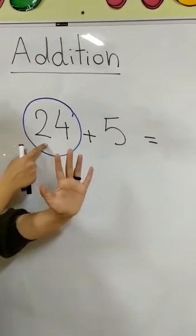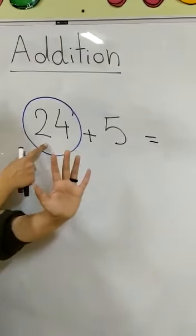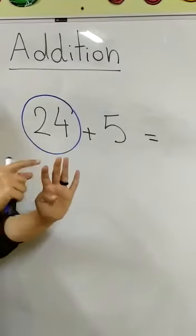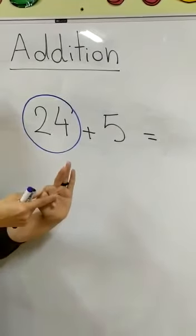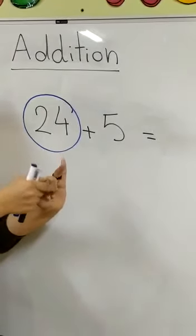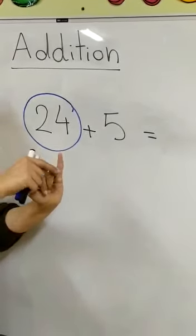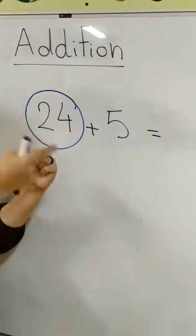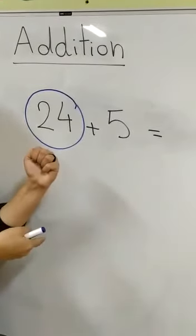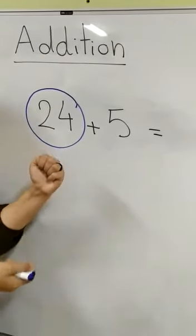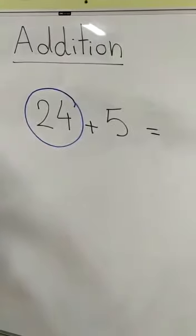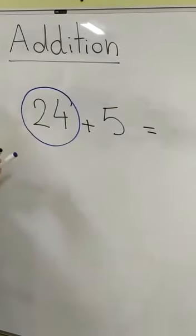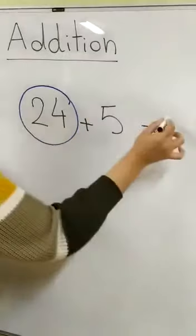After the number in the circle, after 24: 25, 26, 27, 28, 29. Do I have more fingers to count on? No! Excellent! So 24 plus 5 equals 29.